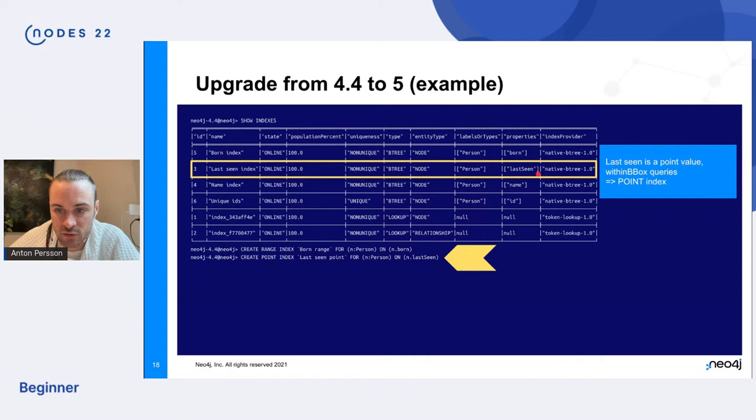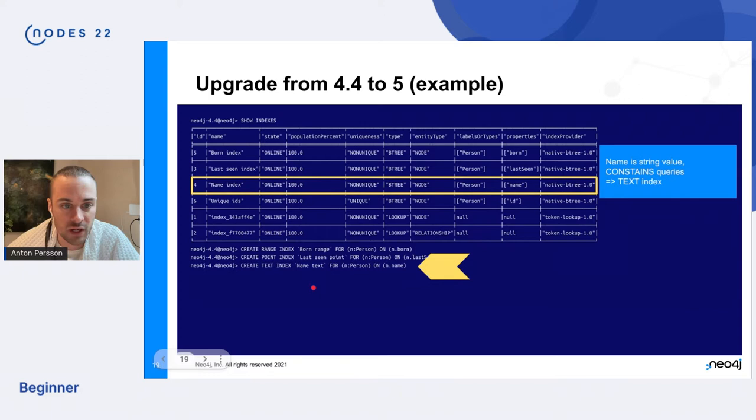Next one, last seen. This is a point property that tracks where the person was last seen. I'm not sure what application this is, some kind of surveillance maybe. But since we want to do within bounding box queries, we create a point index as a replacement. And finally, the name we want to search by contain for names containing a certain substring. So we create a text index for that. So this should be fairly straightforward, I think, as long as you just keep track of what type of predicates do you use for your respective properties.